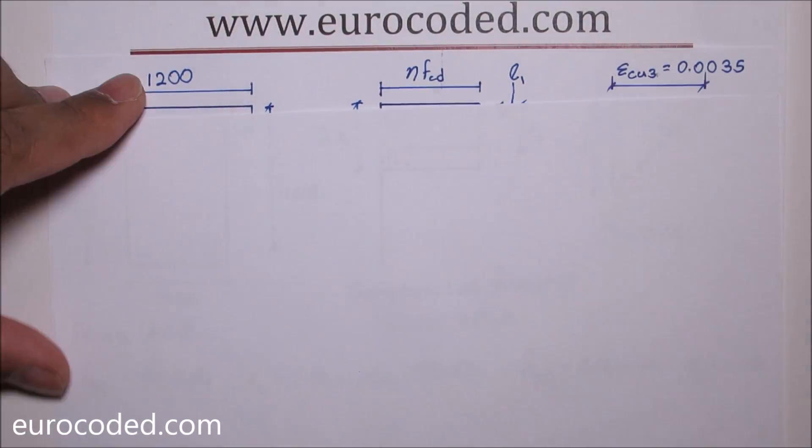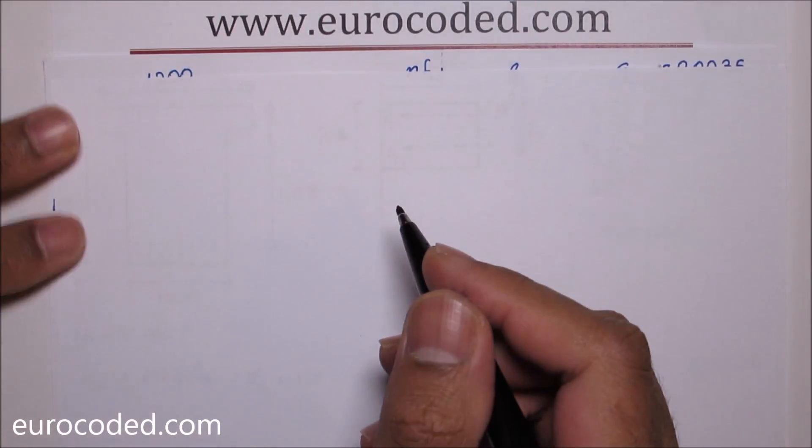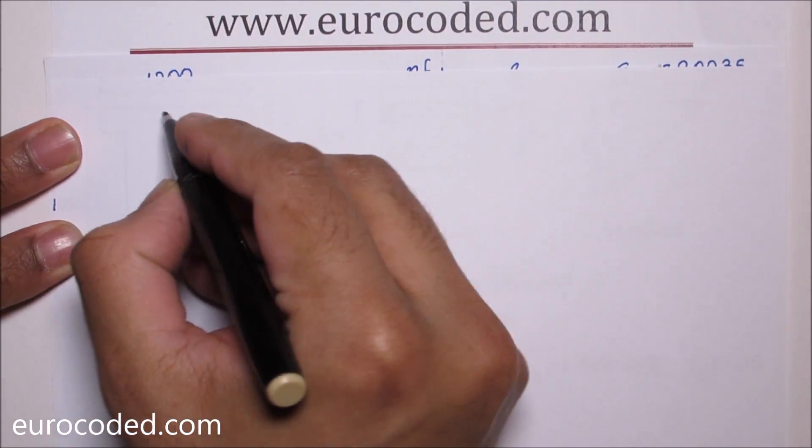First thing I'm going to do is calculate the area of longitudinal reinforcement which is AS, which is pi times 40 over 2 squared times 16 number bars.